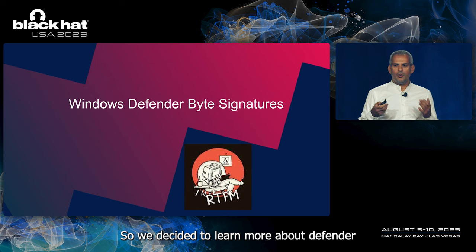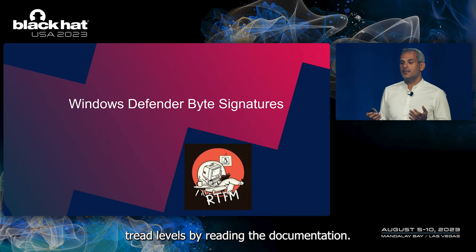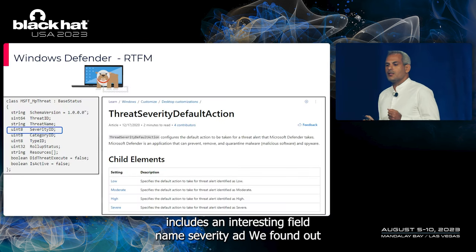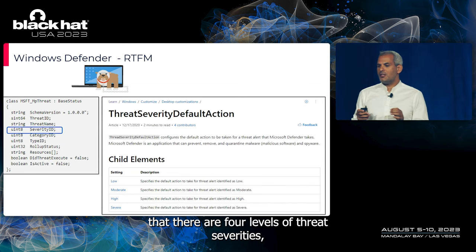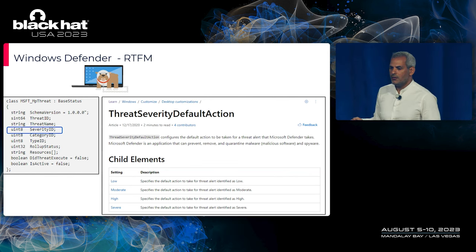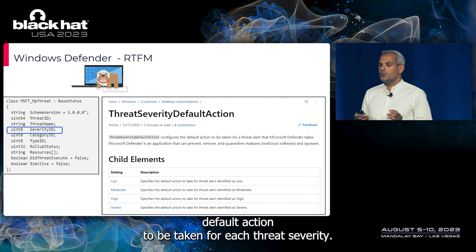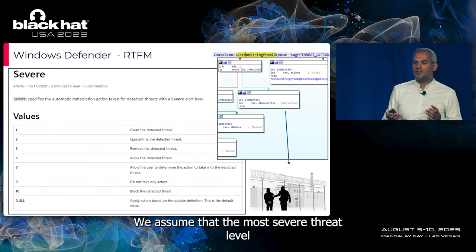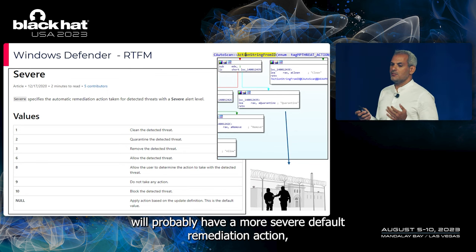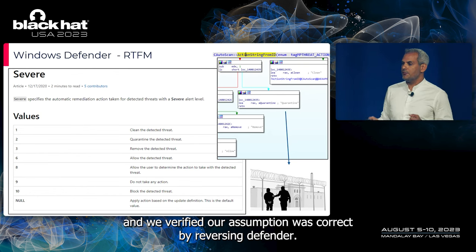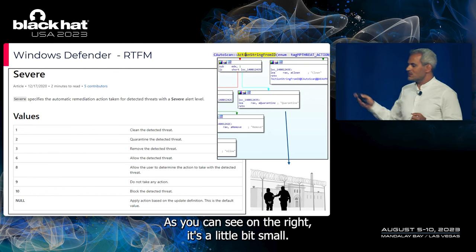We decided to learn more about Defender threat levels by reading the documentation. The MP threat class includes an interesting field named severity ID. We found four levels of threat severity: low, moderate, high, and severe. Each severity level has a default remediation action. We assumed that the most severe threat level would have a more severe default remediation action, and we verified this by reversing Defender.